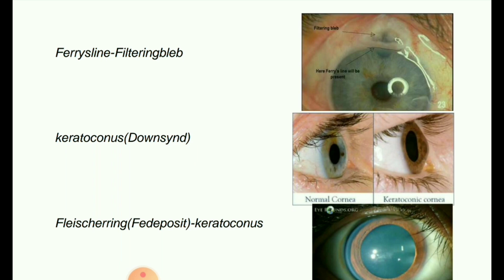Next image: Ferris line — a corneal epithelium iron line at the edge of filtering blebs. Next image: keratoconus, which is seen in Down syndrome. The cornea thins and gradually bulges outward into a cone shape, and can cause blurry, distorted vision.